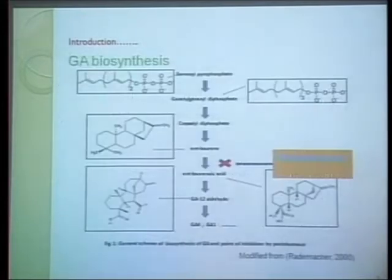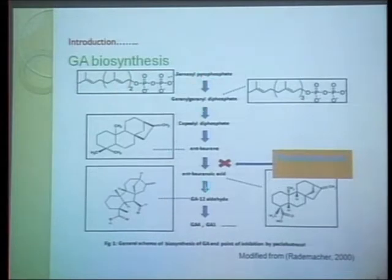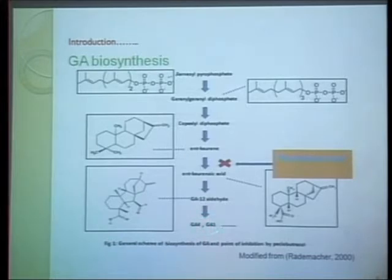Now focusing on GA synthesis: GA is a phytohormone produced in plants through a series of steps. We are particularly concerned about the step involving the conversion of ent-kaurene to ent-kaurenoic acid, because this step is blocked by Paclobutrazol — the chemical used in our experiment to stop the production of GA4 and GA1, which are the active GA species in Arabidopsis.